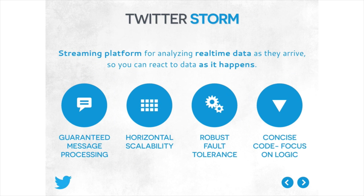Previously, we built Twitter Storm — a streaming platform to analyze real-time data as it arrives, so we can react to the data as it happens. It provides guaranteed message processing with no data loss, horizontal scalability to handle big traffic, robust fault tolerance to handle any failure cases, and also a very concise code design. People just need to focus on the core logic and don't need to handle hard machine failure cases.